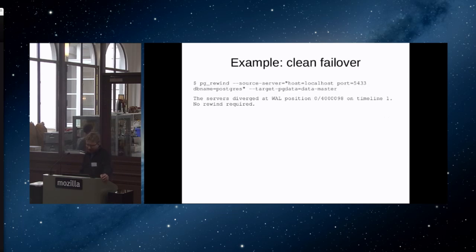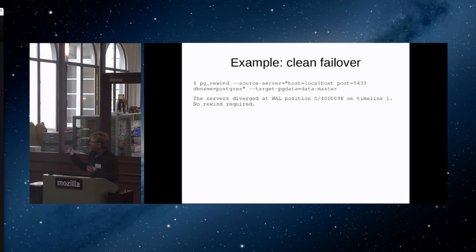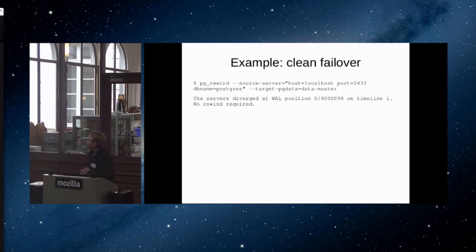If you run pg_rewind and nothing had actually changed — for example, if you managed to do the clean controlled failover I talked about earlier — it will just tell you that no rewind is required and do nothing. So it's always safe to run pg_rewind if you're unsure whether you need to. There is also a dry run mode: specify the dry-run option and it will do everything it otherwise would but will not actually modify the target server. Very useful for testing.